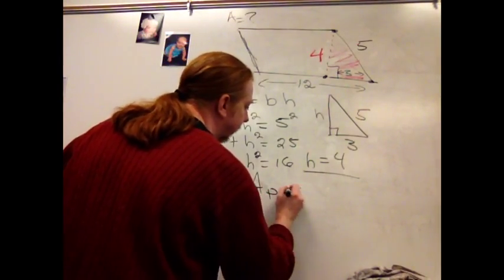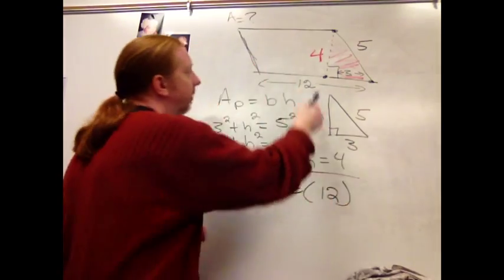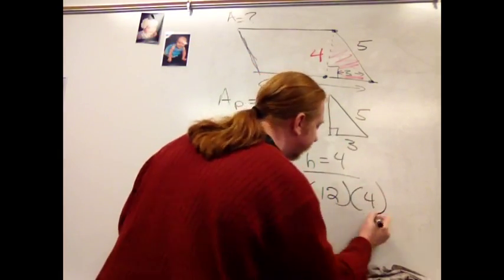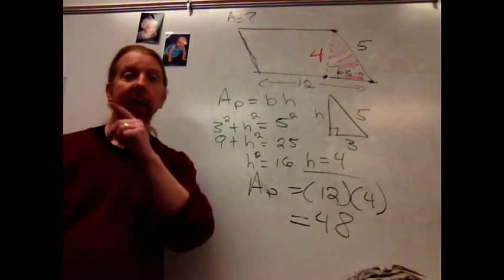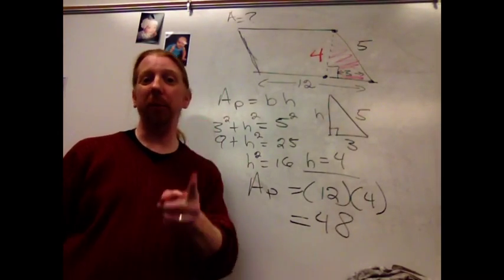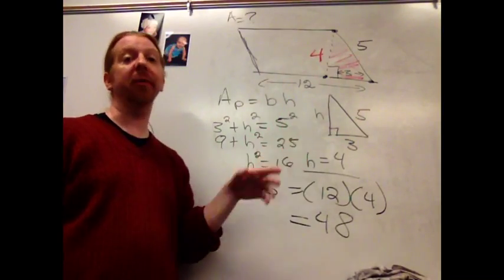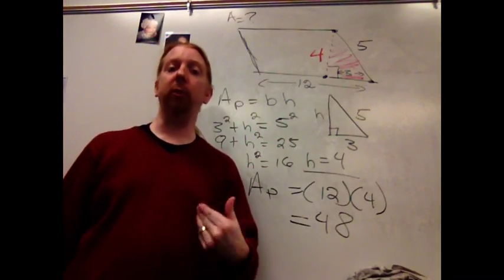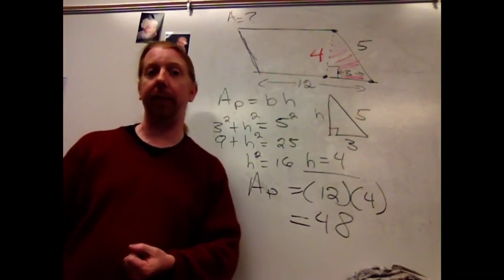The area of a parallelogram is the base, 12, times the height, 4, and that gives me 48, which is different than what I would have had if I'd used 5, that's the height, which is that slant, that would have given me 60. I've lost 12 square units of area by kicking this rectangle over into the realm of parallelogram.